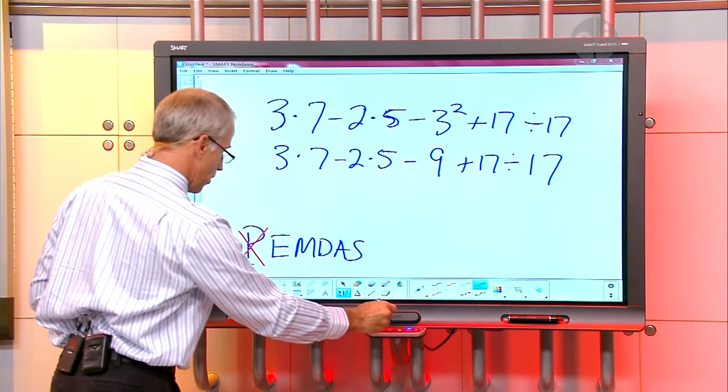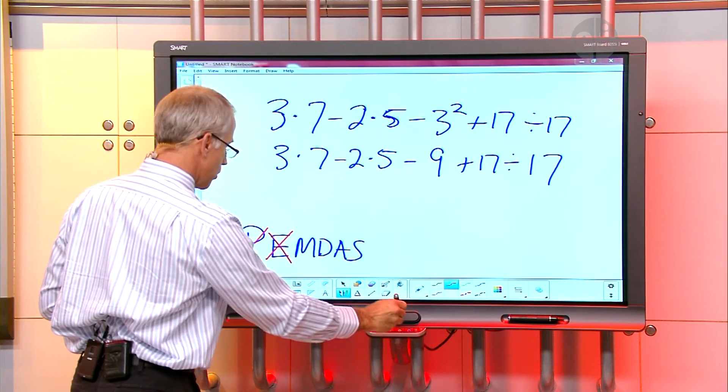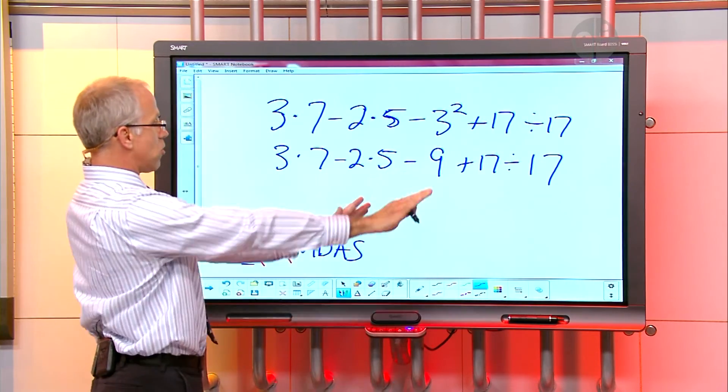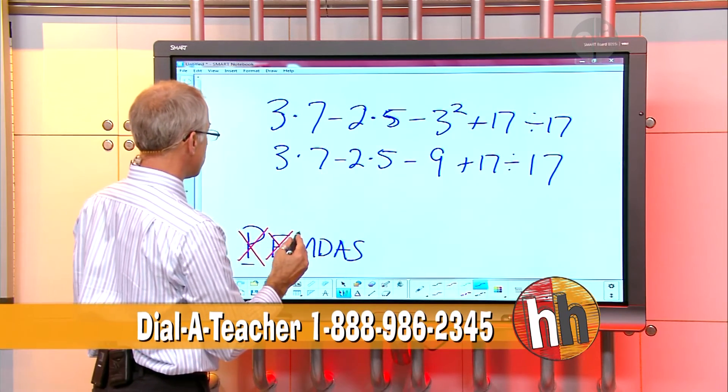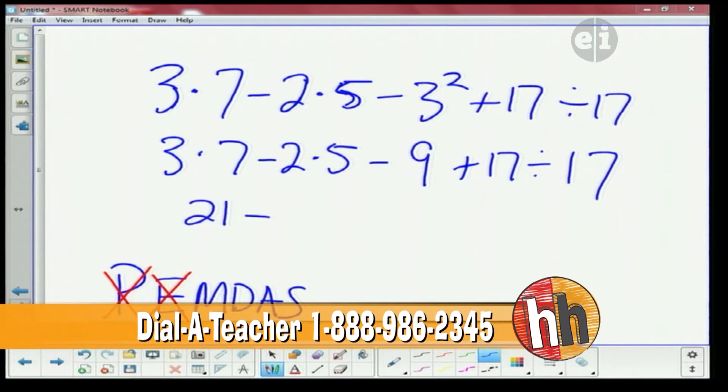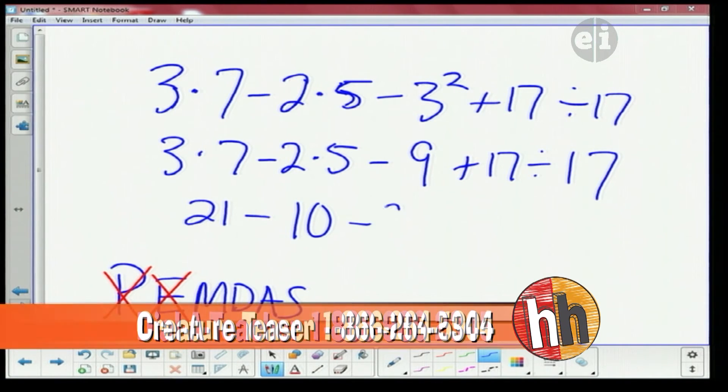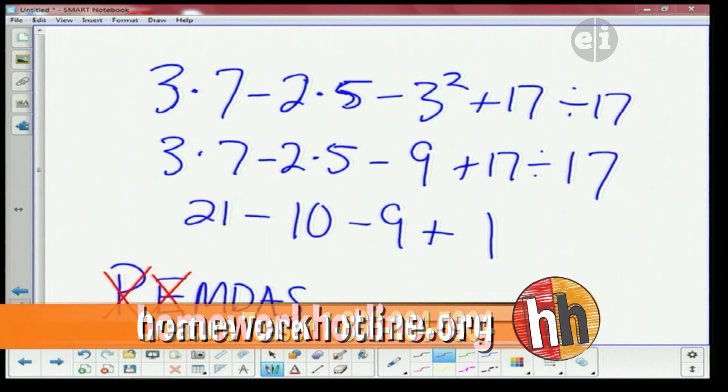Now we got rid of our exponents, okay? Now we're going to do multiplication and division as we go across, okay? So now I have 3 times 7 is how much? So I have 21 minus, what's 2 times 5? Alright, look, you're ahead of me. Minus 10, minus 9 and then I go plus 17 divided by 17 is 1. Alright, good, we do that. So we just did our multiplication and division.